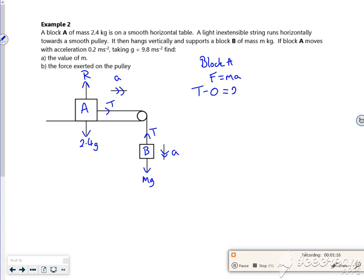So I can rearrange that as T minus 2.4a equals zero. Then let's have a look at block B. Doing F=ma in the direction of travel, I've got mg going down minus tension equals ma.